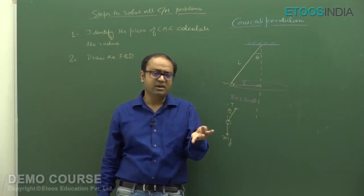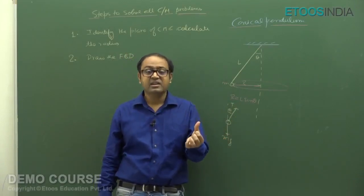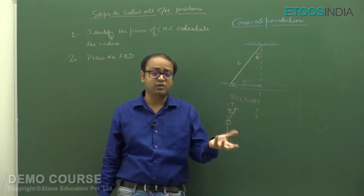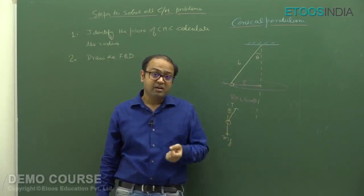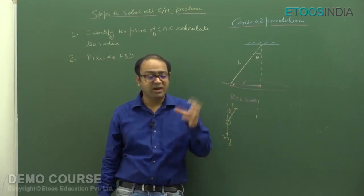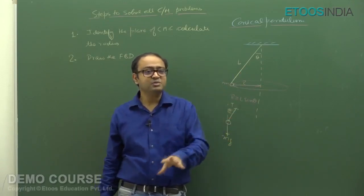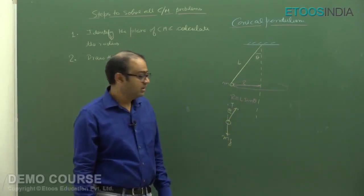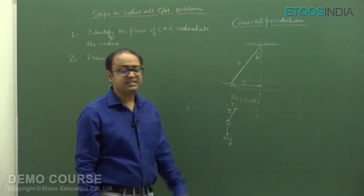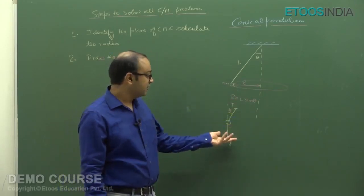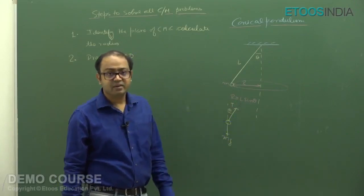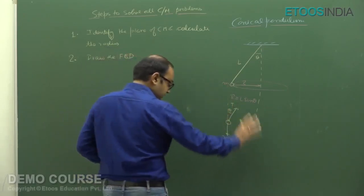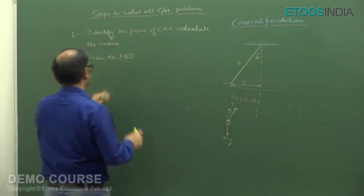The real forces are: tension, friction, normal, spring, gravity — and later, electrostatic, electromagnetic, magnetic forces. But there is no force called centripetal force as a separate entity. The component of tension acting towards the center is T sin theta — that is what acts as the centripetal force in this case. So tension and Mg are the complete free body diagram.